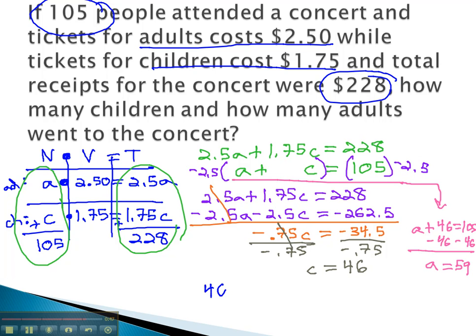At this concert, we have 46 children tickets and 59 adult tickets. A plus c is 56.